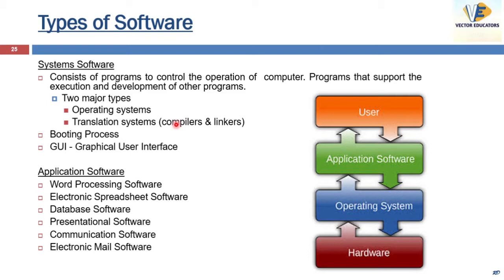Another term is firmware. Firmware is a very specific low-level program for hardware that allows it to accomplish some specific task. Firmware is permanent with the hardware. For example, firmware is part of devices such as video cards, sound cards, disk drives, etc.